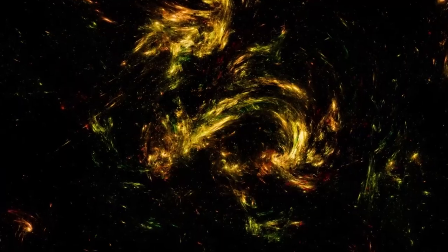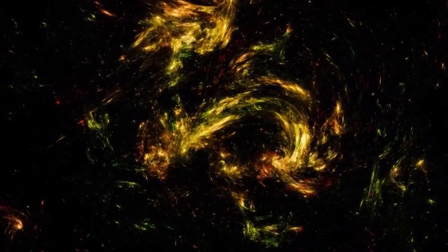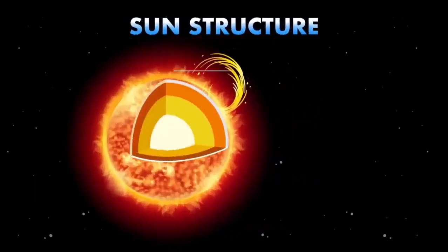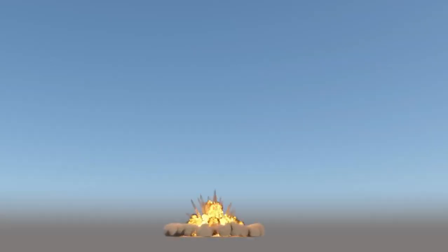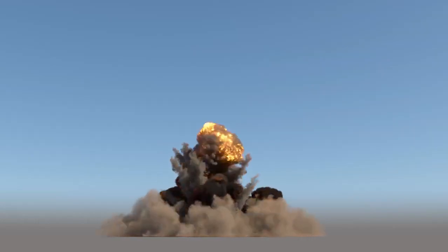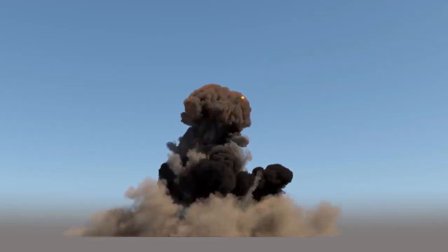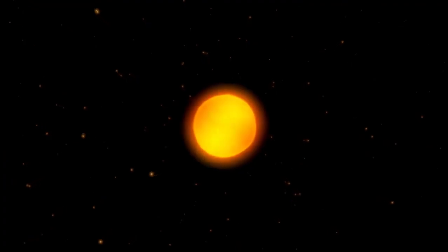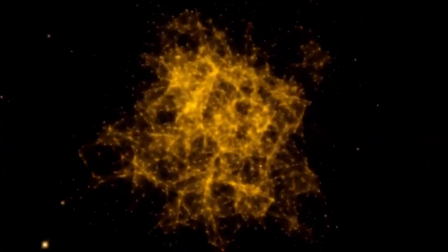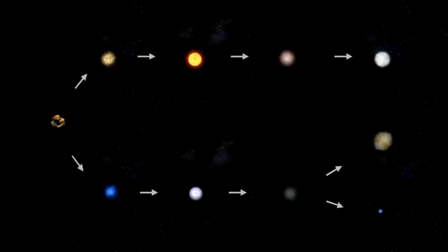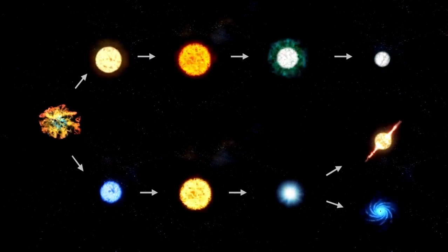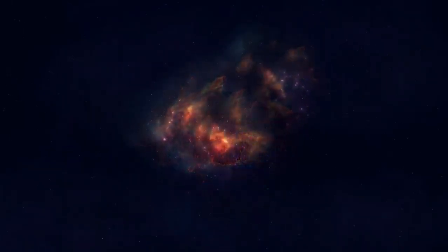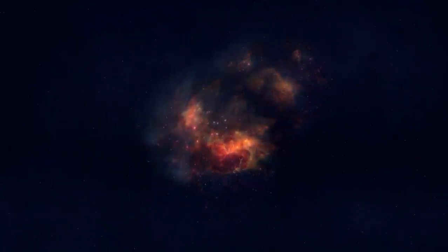These discoveries about Betelgeuse aren't just about that one star. They give us a big understanding of red giants, which are these super huge stars known for making a lot of stuff in the universe. Stars like Betelgeuse are like giant factories where elements heavier than helium get created. Astronomers call these heavier elements metals, and how they form in red giants is a really important process. Understanding how star spots affect temperature changes and block radiation helps astronomers get what's going on inside red giants.